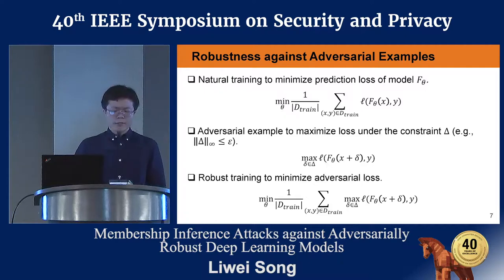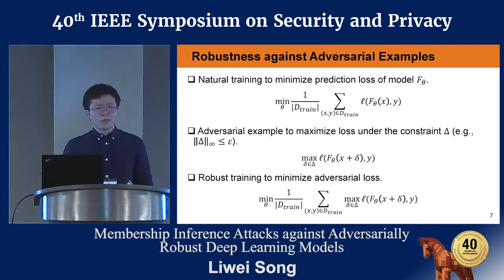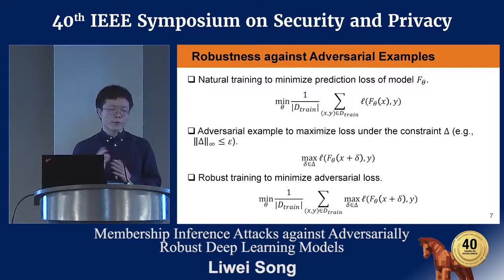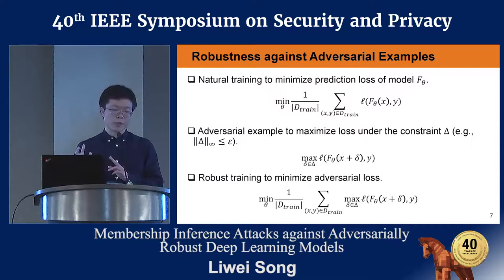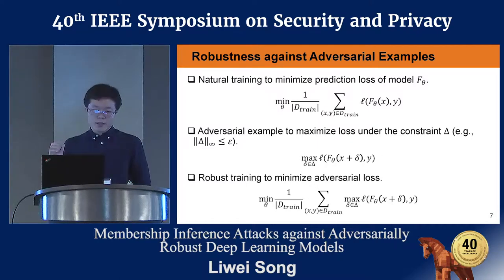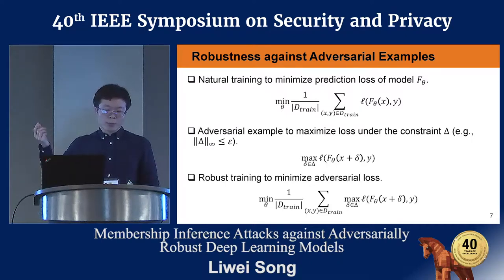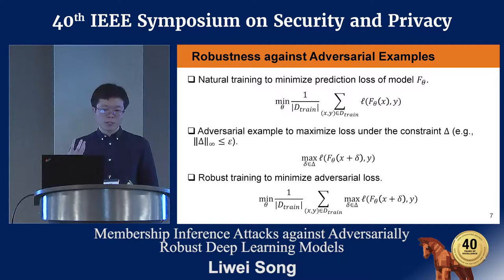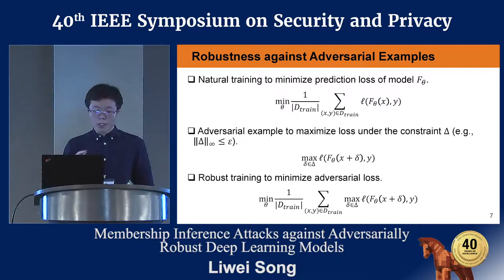In fact, a lot of defenses propose different ways to approximate this adversarial loss. That's a brief introduction to how we create models robust against adversarial examples. Now let's switch to the privacy part.